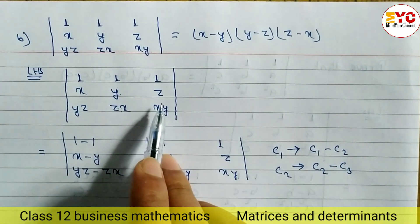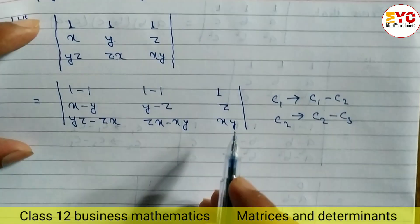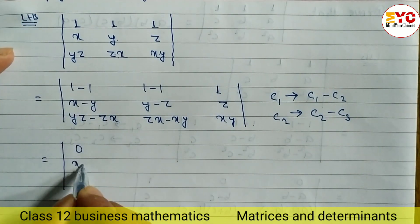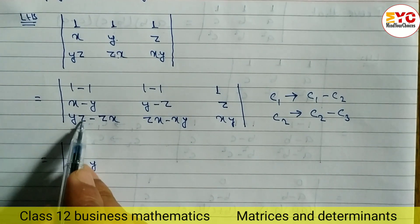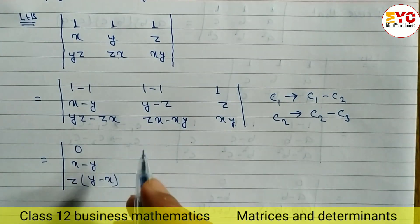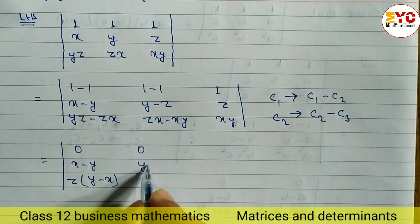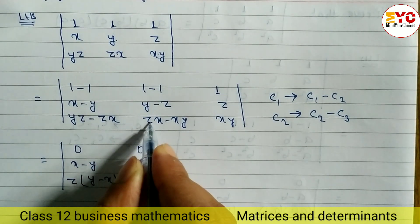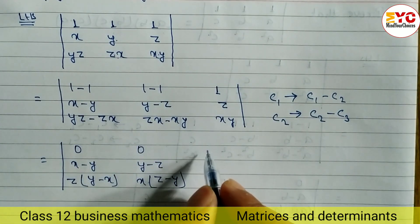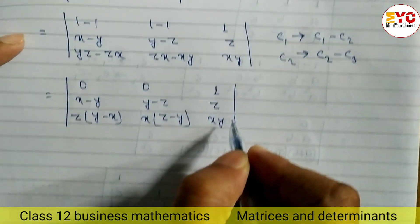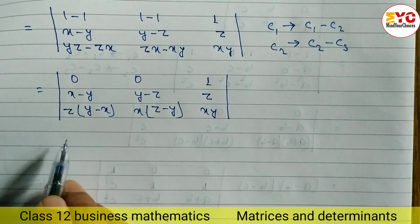After the column operations, 1 minus 1 gives 0. We get x minus y. In the yz minus zx entry, we can see z is common, so we take z common and the remaining factor is y minus x. Similarly, in the other entry we get 0 and y minus z. From the zx minus xy entry we take x common, leaving z minus y. And the third column remains the same. After this, we have to take common factors, but first we may need to interchange signs.